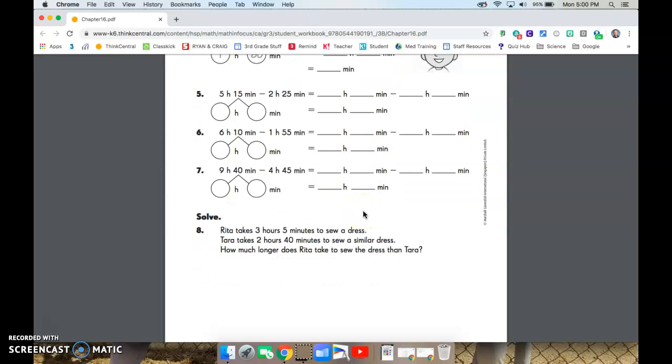All right, last one here. Rita takes three hours and five minutes to sew a dress. Tara takes two hours and 40 minutes to sew a similar dress. How much longer does Rita take? Longer tells us it's going to be a subtraction problem. So we're going to take the three hours and five minutes minus two hours and 40 minutes. I see the five is less than 40, so I'm going to have to regroup.